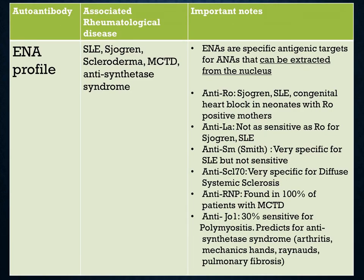The ANA profile is associated with rheumatological diseases such as SLE, Sjogren's syndrome, scleroderma, MCTD, and antisynthetase syndrome. ANAs are specific antigenic targets that can be extracted from the nucleus. Anti-Ro is found in Sjogren's and SLE, and is associated with congenital heart block in neonates with Ro-positive mothers. Anti-La is not as sensitive as Ro for Sjogren's and SLE.